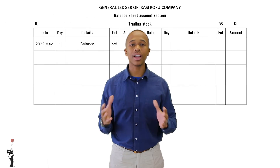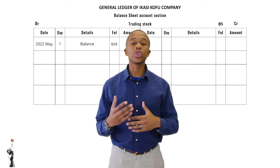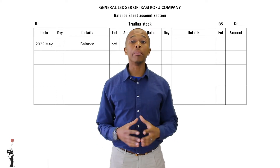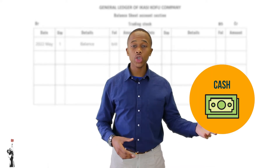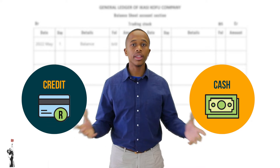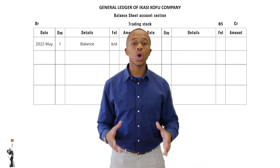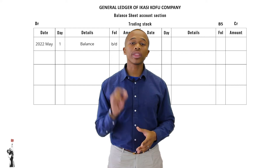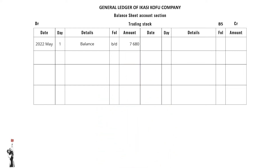All right, great nines — this one was quite time consuming, but let's start marking. We will start with the general ledger and specifically the trading stock T-account. Remember the balance is already recorded. Ikasu Kofu Company can buy trading stock either by cash or on credit, and this must be recorded on the trading stock T-account. Let's start with cash — if we buy trading stock with cash, it will be recorded in the CPJ, the cash payments journal.